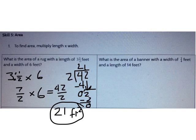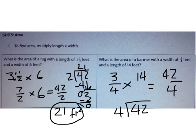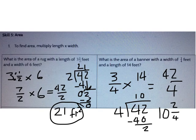What is the area of a banner with a width of ¾ feet and a length of 14 feet? I multiply ¾ times 14, which gives 42 over 4. Dividing 42 by 4 gives 10 and 2/4. That answer is not quite done — I need to simplify. 2 goes into both 2 and 4, so 2/4 simplifies to 1/2. The correct answer is 10½ square feet.